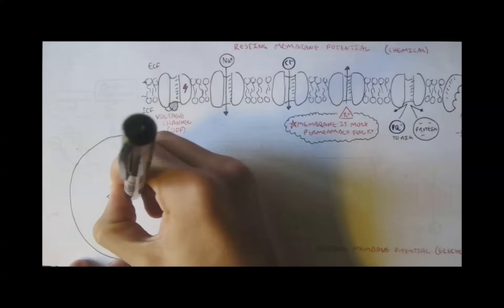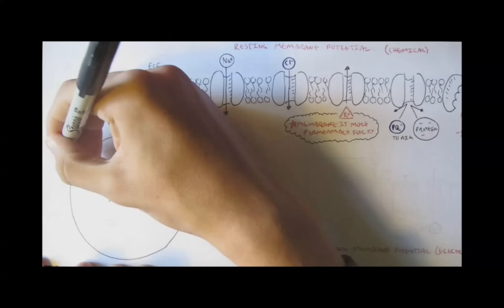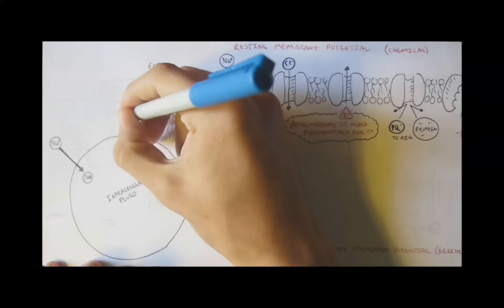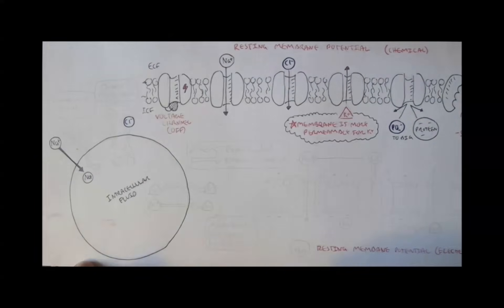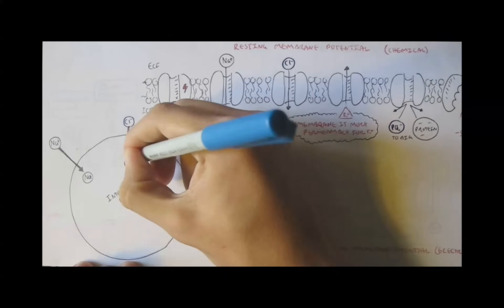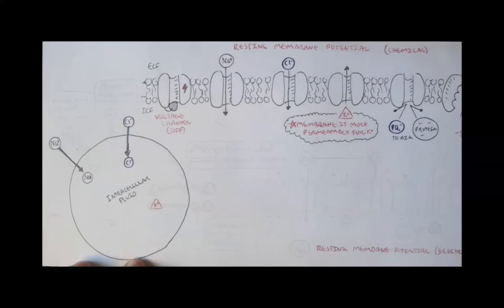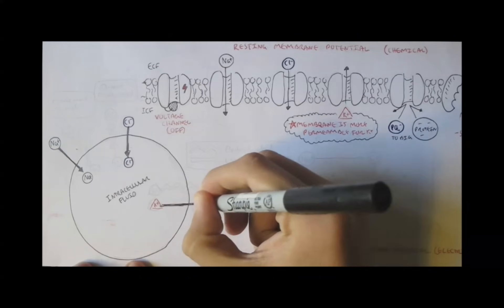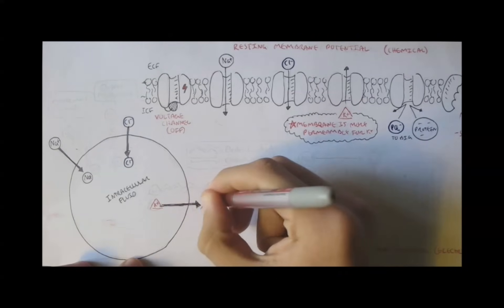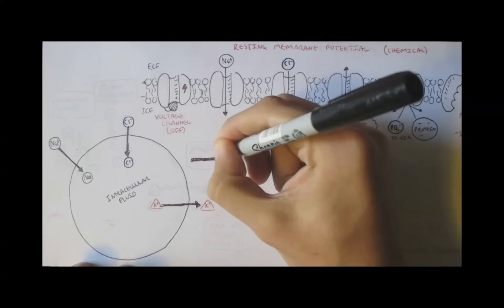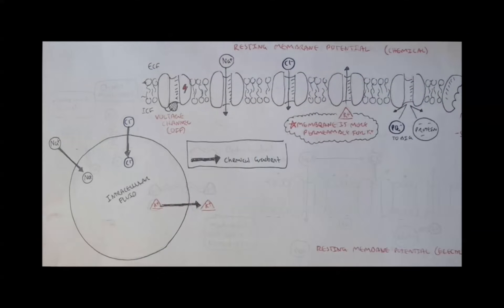Let's draw this in a different diagram. This circle represents the axon, meaning this is the inside of the cell. Sodium, which is more plentiful outside, will want to move in. Chloride also wants to move in. Potassium, however, will move outside because there is less potassium concentration outside. The black arrow represents the chemical gradient of the ions.